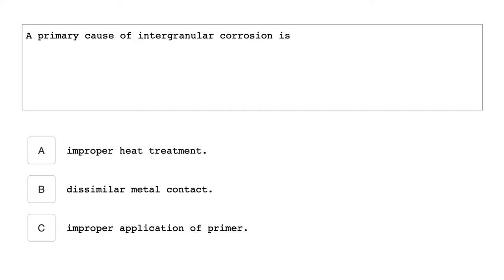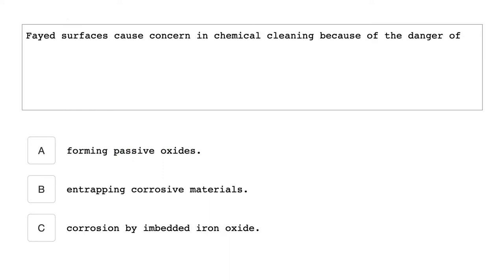A primary cause of intergranular corrosion is improper heat treatment. Faying surfaces cause concern in chemical cleaning because of the danger of entrapping corrosive materials.